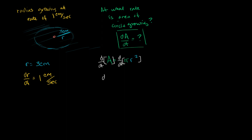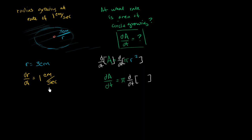On the left-hand side, we get the derivative of our area with respect to time. On the right-hand side, pi is a constant so we take it out front: pi times the derivative with respect to time of r squared. We're assuming r is a function of time — I'll write r(t) — so we're finding the derivative of r(t) squared. Here we apply the chain rule: the derivative of something squared with respect to that something is 2 times that something.